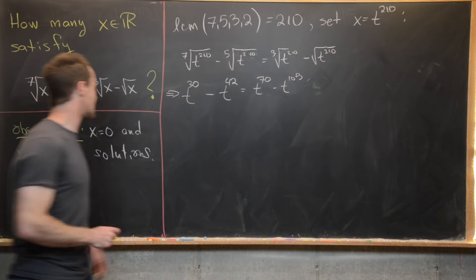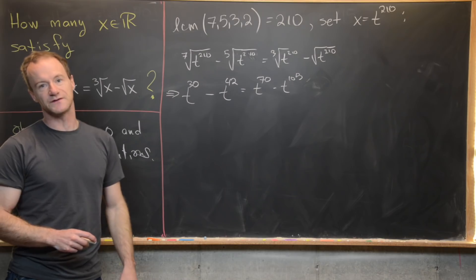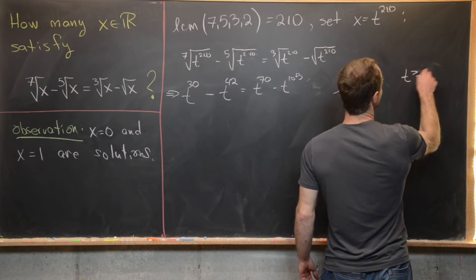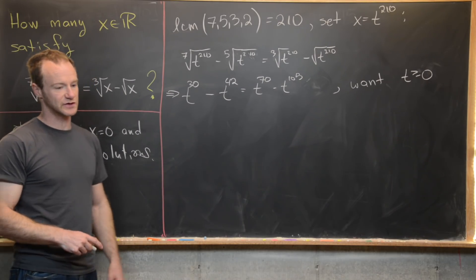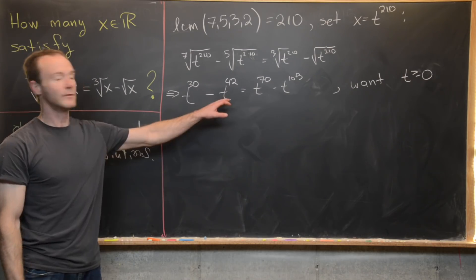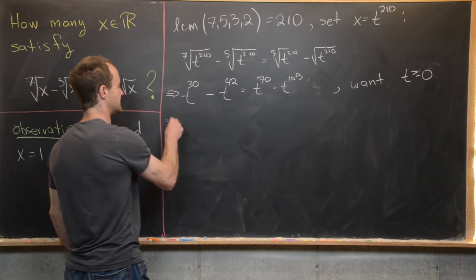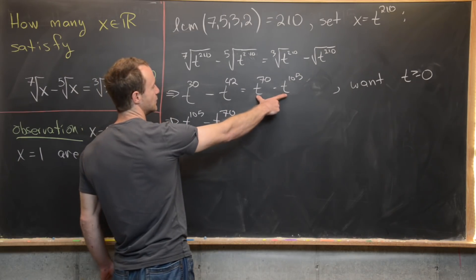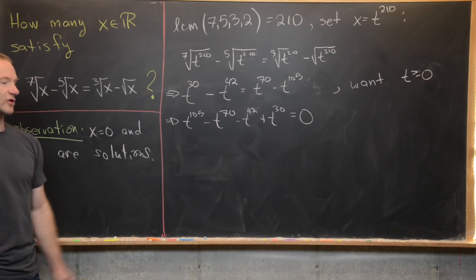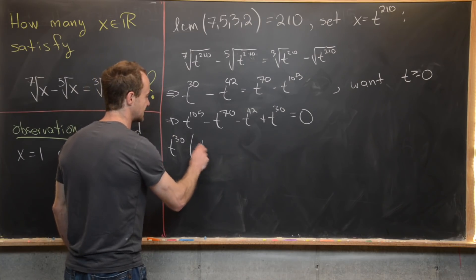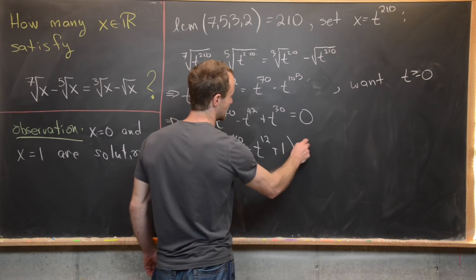We also notice that our solutions can only be non-negative values of x, so we're looking for non-negative values of t, meaning t ≥ 0. Moving everything to the left-hand side in decreasing order of exponents gives us t^105 minus t^70 minus t^42 plus t^30 equals zero. We can factor out the greatest common factor t^30, leaving t^30 times the quantity t^75 minus t^40 minus t^12 plus 1 equals zero.